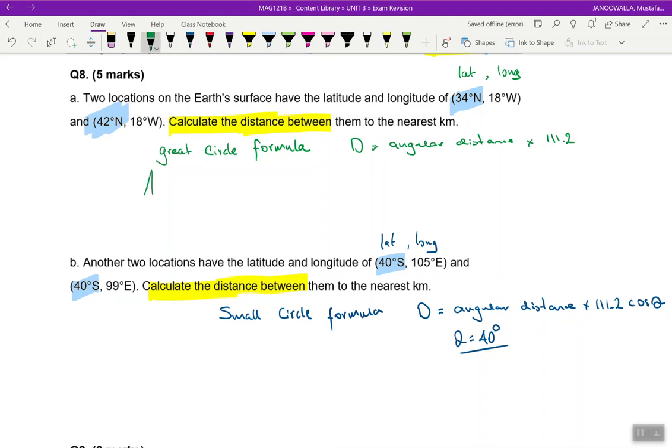And then we just need to plug it into the formula. So angular distance which is 8 in degrees times 111.2 kilometers gives us 889.6 kilometers. Don't forget your units, it's important.